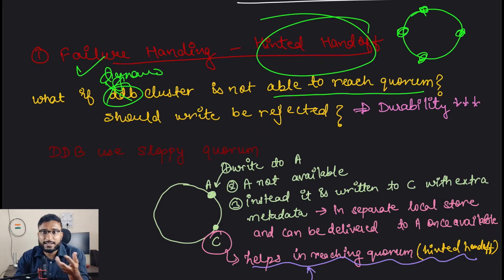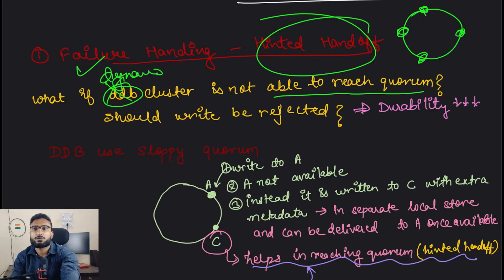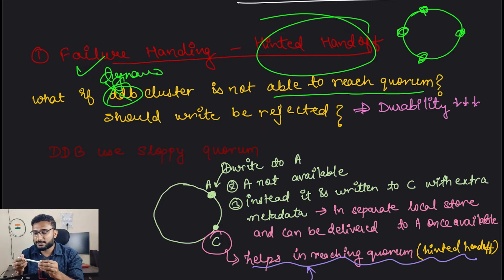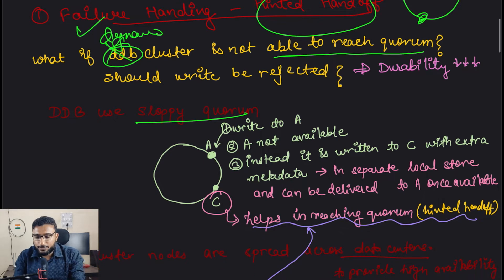In those scenarios you will not be able to reach quorum. Should you reject that read or reject that write? We mentioned that we will never reject a write. But if we are not able to reach quorum, there are defined values for how you can still write - and that is where something called sloppy quorum comes in.